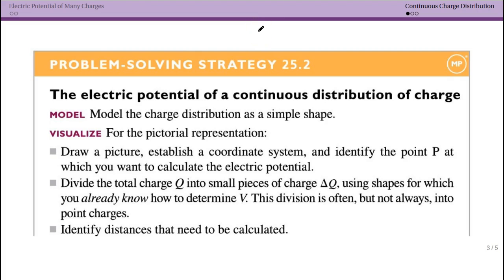What if instead of discrete point charges like two or three, we have a continuous distribution of charge? That is, a line of charge, a ring of charge, a surface of charge?